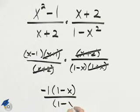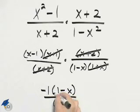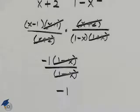which will give us 1 minus x in the denominator. Now we note that we have common factors, which can be divided out, which leaves us with negative 1 for our answer.